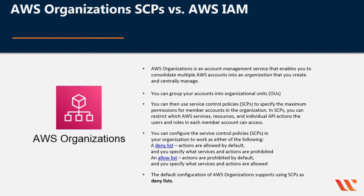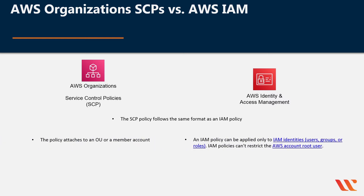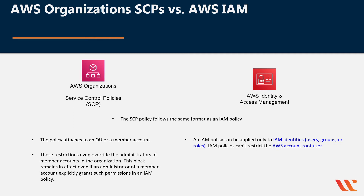Let's look at how these compare between AWS Organization SCPs versus AWS IAM. Service Control Policies follow the same format as an IAM policy. The difference, though, is that an SCP attaches to an OU or a member account, whereas an IAM policy can be applied only to IAM identities like users, groups, or roles. IAM policies can't restrict the AWS account root user. Back to SCPs — these restrictions even override the administrators of member accounts in the organization. This block remains in effect even if an administrator of a member account explicitly grants such permission in an IAM policy. So SCP policies win out.